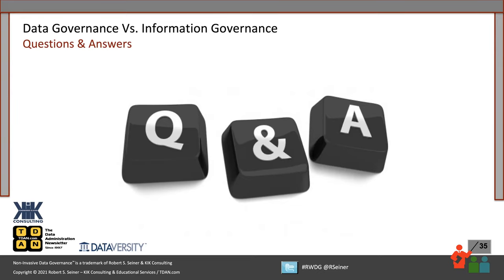You know what? I had never thought of it that way before — that we could actually have DIG instead of DG. There's nothing stopping you from calling it data and information governance. If you're doing that, I'd be curious as to how people are responding to that. I think it's great. You need to name it something appropriate for your organization. If data and information governance covers what you need — you're covering structured and unstructured data — just be ready to answer the question: why are you calling it data and information governance? Tell them it's because you're focusing on both structured and unstructured data.